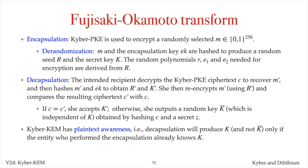Kyber KEM has plaintext awareness. This means that decapsulation will produce k and not k-bar, provided that the entity who performed the encapsulation already knows k. This provides resistance to chosen ciphertext attacks, since the adversary will not learn anything useful by presenting a ciphertext to Alice for decryption. Either the adversary already knew the plaintext and learns nothing new, or Alice will return a randomly generated key k-bar, so again the adversary learns nothing useful.